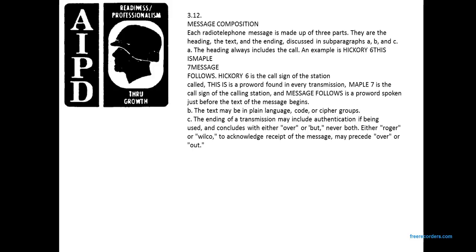Chapter 3-12: Message composition. A railroad telephone message consists of three parts: heading, text, and ending. The heading includes the called station, the pro-word 'This Is,' and the calling station's call sign, followed by 'Message Follows.' The text contains plain language, code, or cipher groups. The ending includes authentication and either 'Over' or 'Out,' but never both. 'Roger,' 'Wilco,' and acknowledgment of receipt may follow an 'Over.'